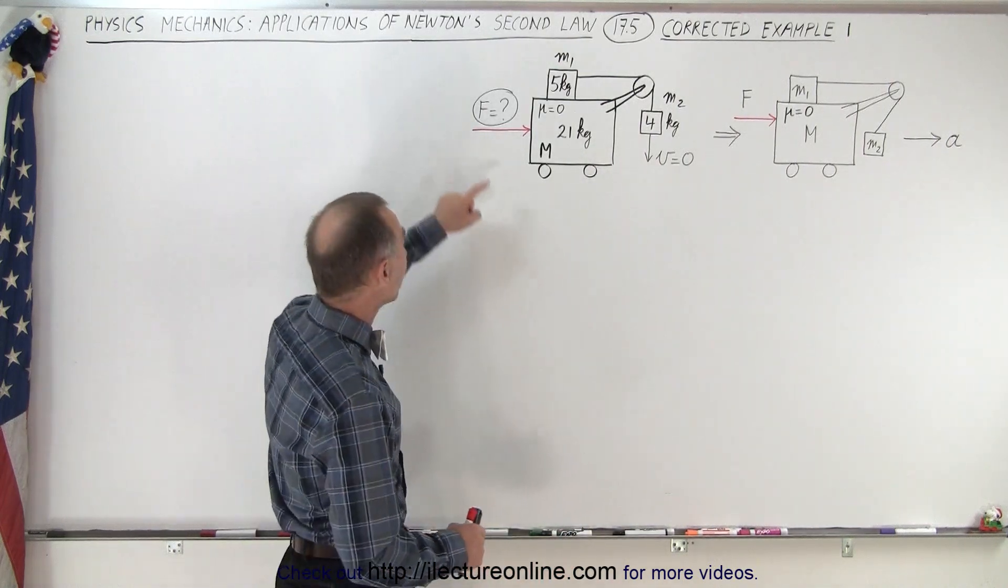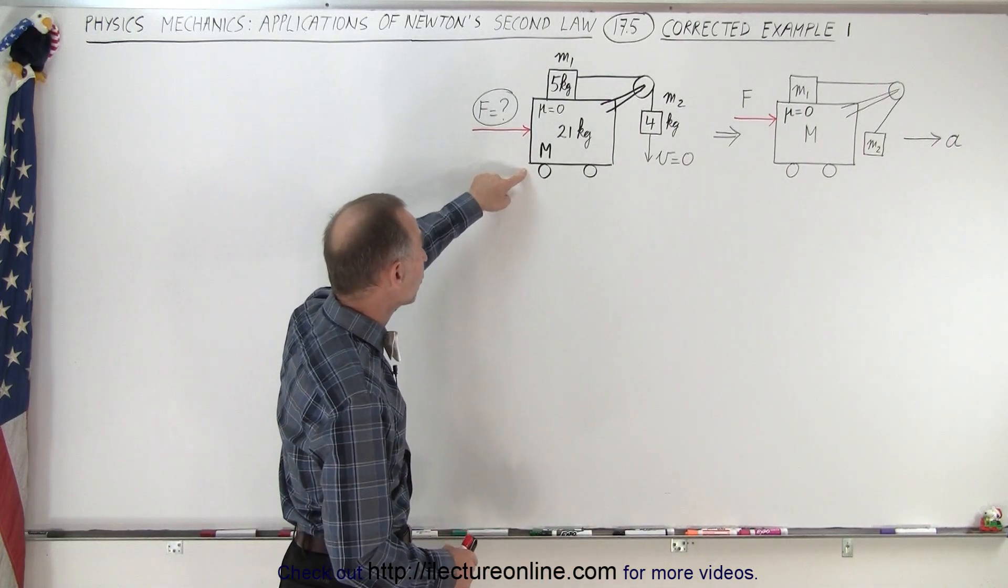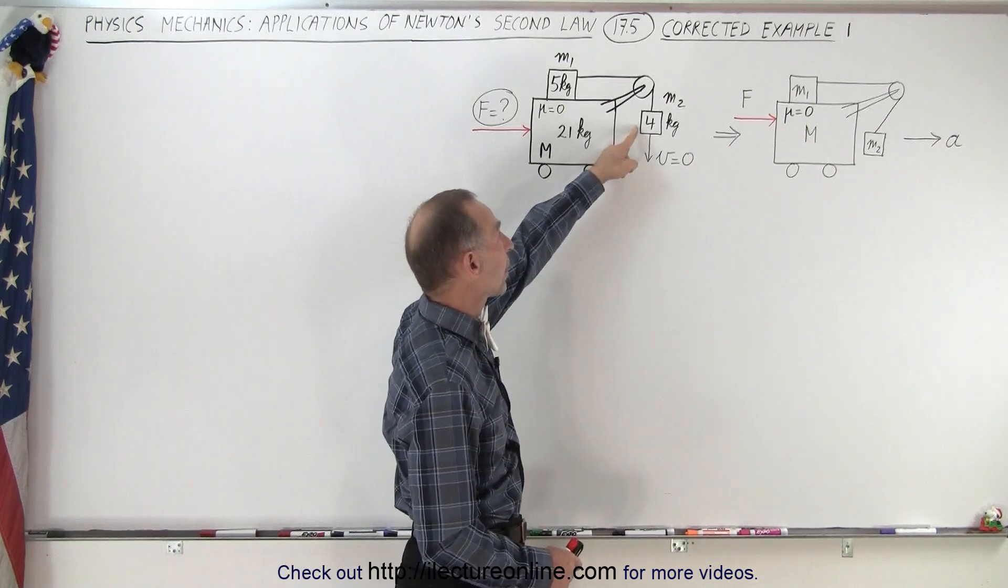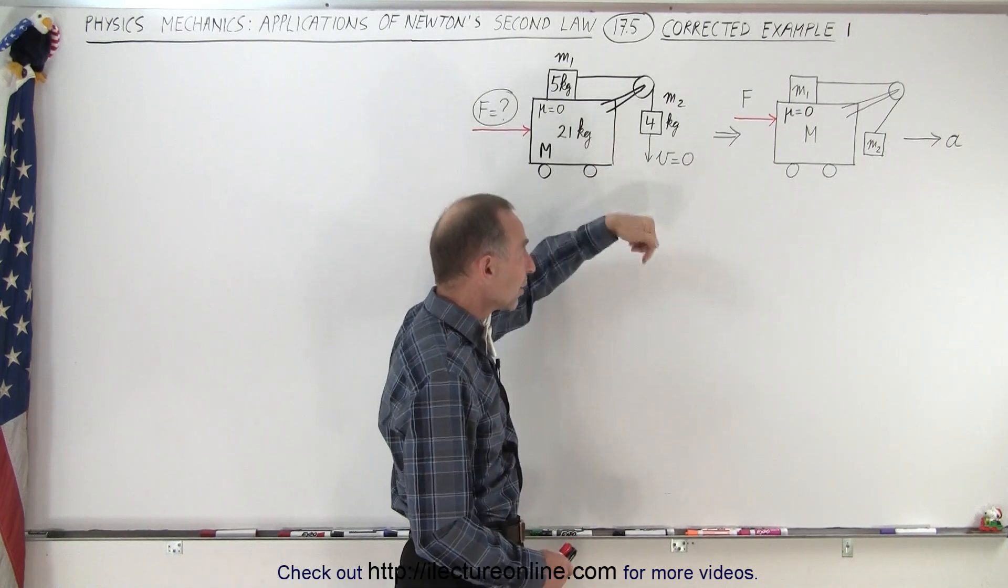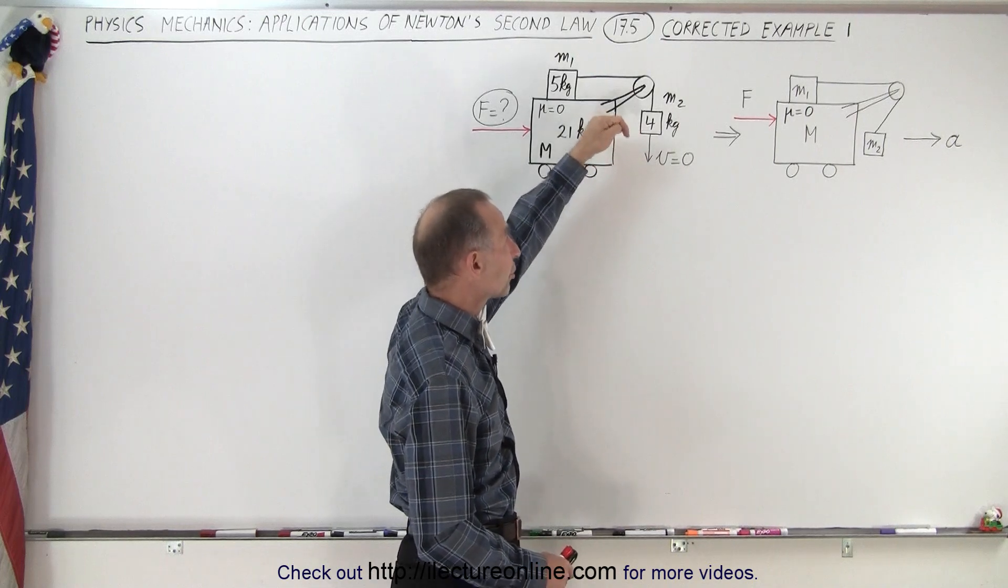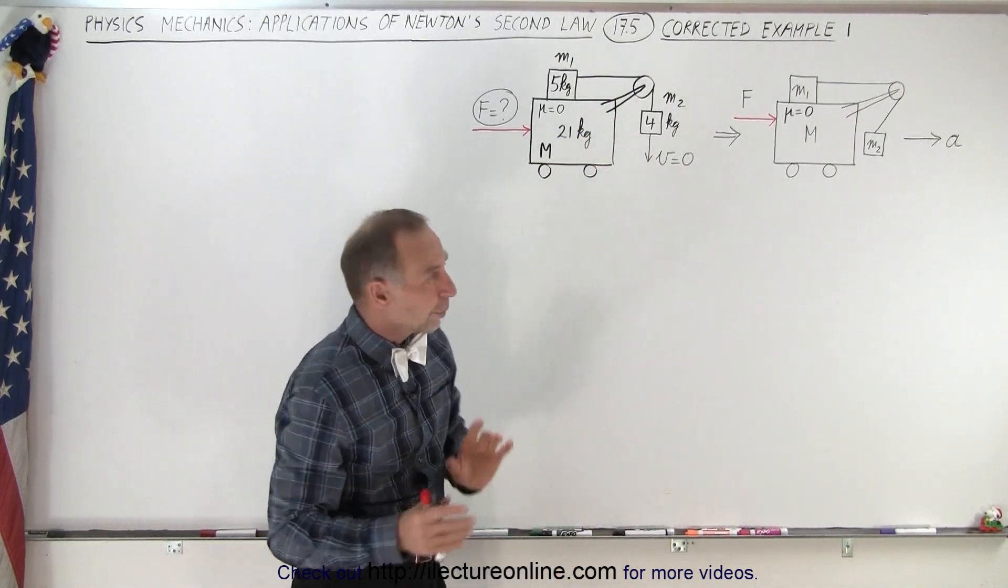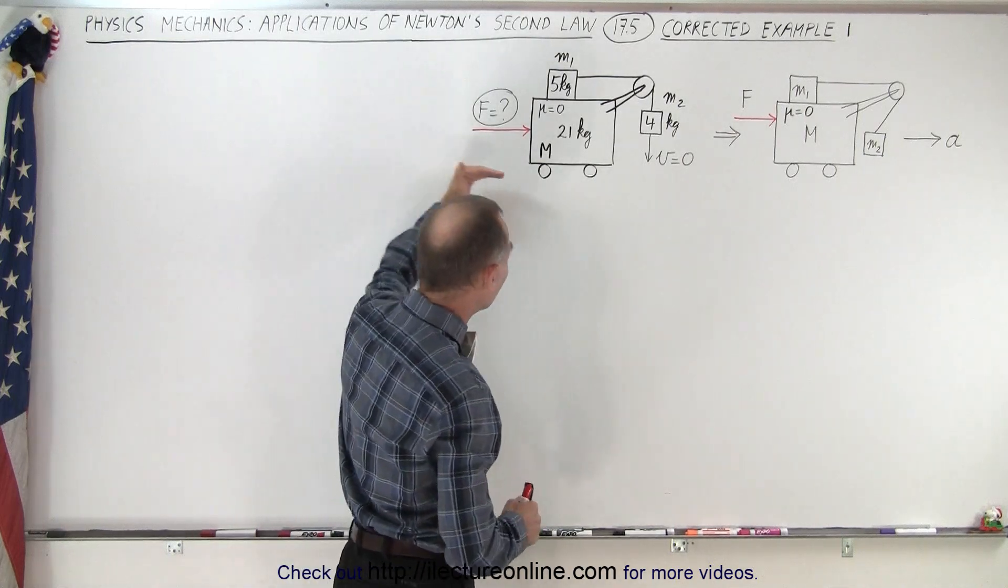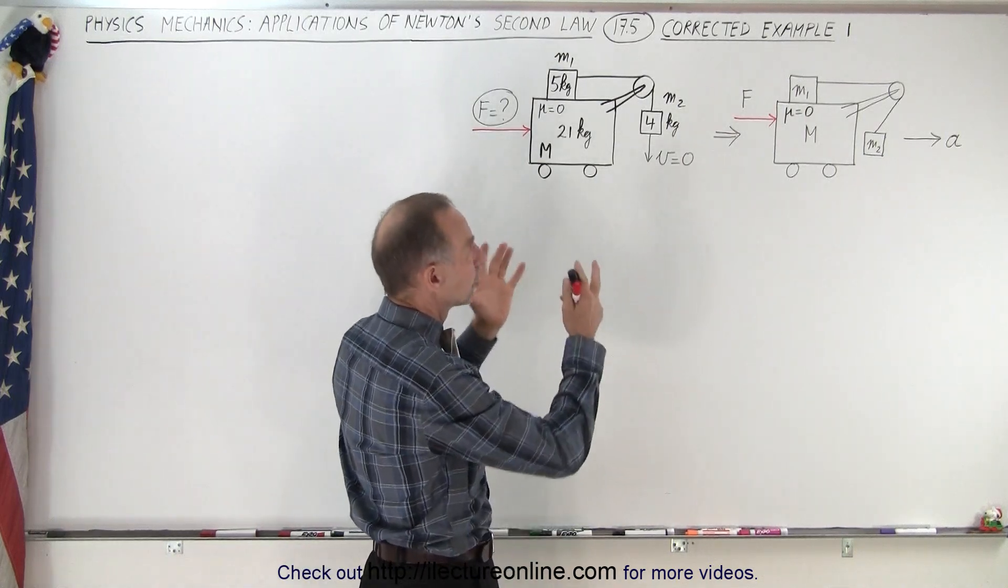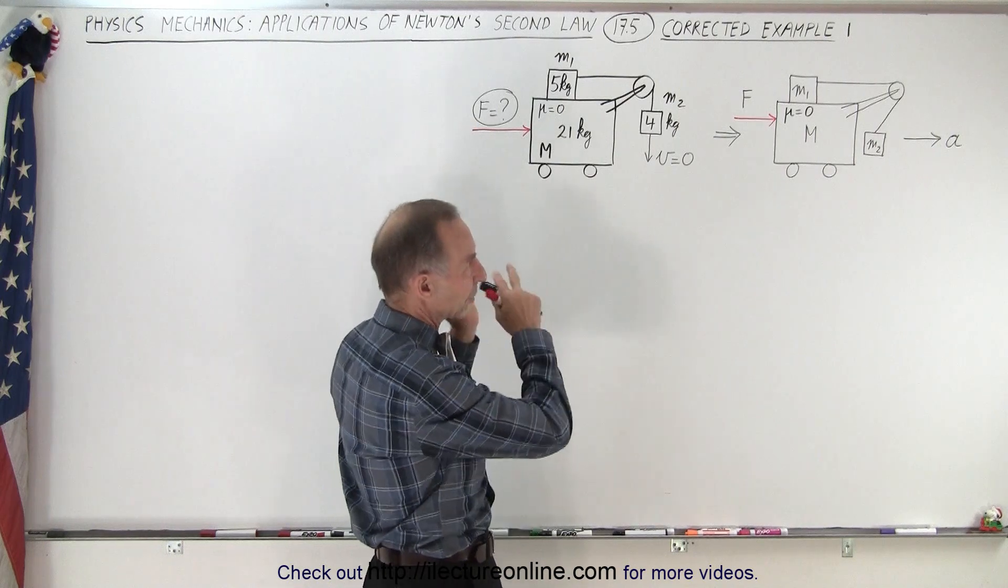Now the question is, what is the force that must be applied to this car in such a way that the velocity of this object is zero? In other words, that this object does not go down in the downward direction, that everything stays in place. Of course, we have to realize that once a force is applied and the whole caboodle, all three masses are accelerated,